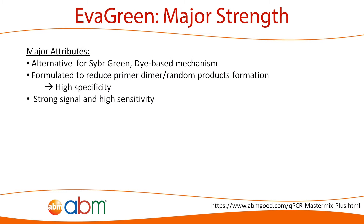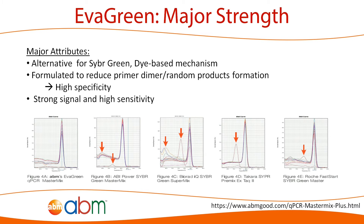Unlike conventional PCR, where the use of electrophoresis is required to demonstrate specific amplicons, qPCR allows identification of amplified fragments by melting curve analysis. Since primer dimers and nonspecific amplification can add to the overall CT values, specificity is a very important aspect to look at when comparing different qPCR master mixes.